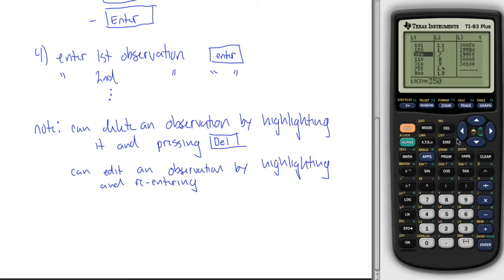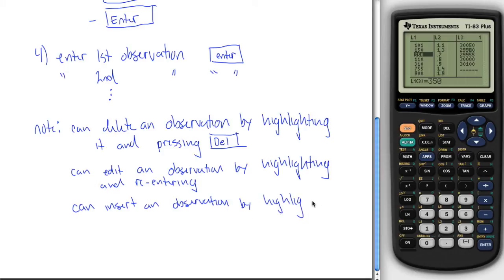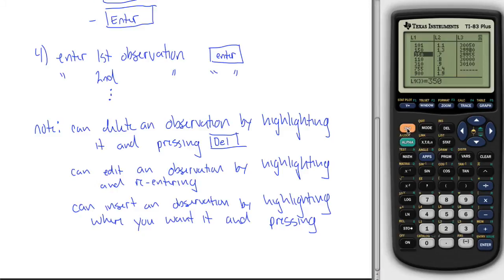But now I've got to put 200 back in. So if I go down and highlight where I want 200, then I can insert an observation by highlighting where you want it and then pressing, it's actually two different keys you'll have to hit here. We want to get to insert up here, which is in yellow or orange above this delete key. So we'll hit second to say we're getting into the yellow menu. And then we'll hit delete to get this insert here. And what you'll notice is it pushed 350 down to the fourth and put in a zero. So let me say how to do this, by hitting second, then delete.